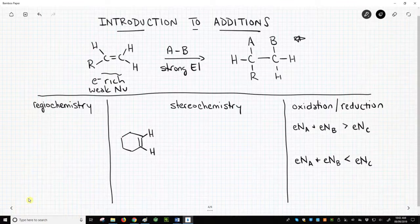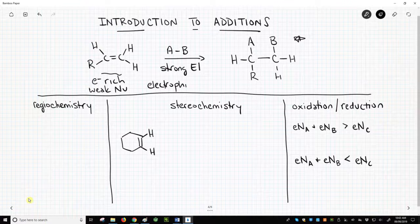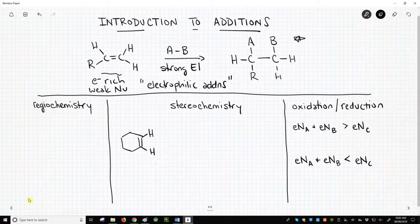Therefore, alkene additions are often called electrophilic additions because an electrophile, AB, adds to the pi bond.